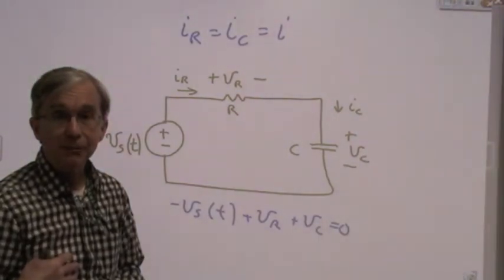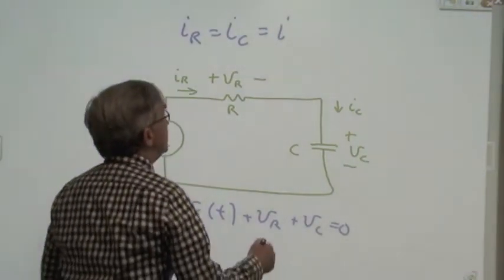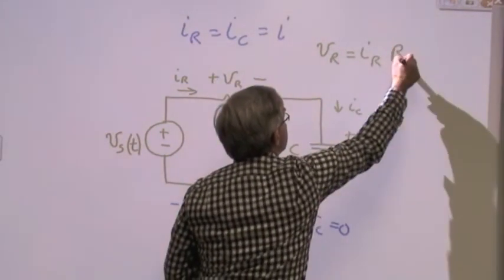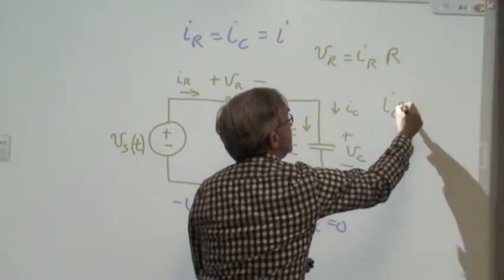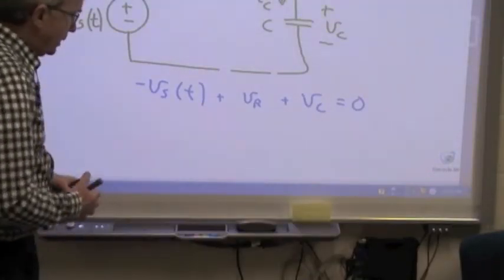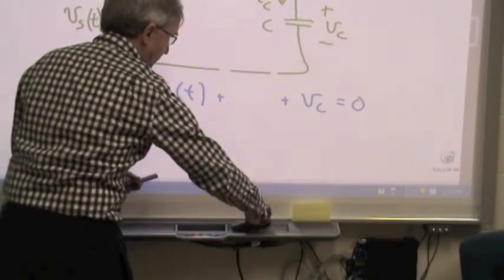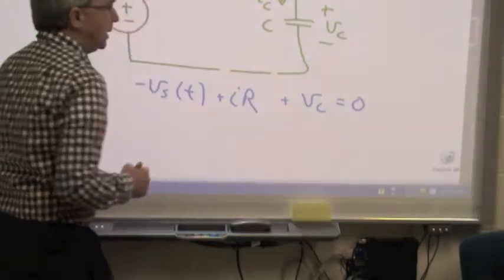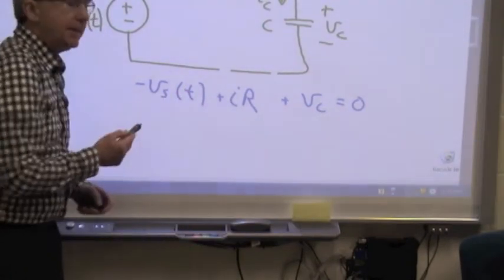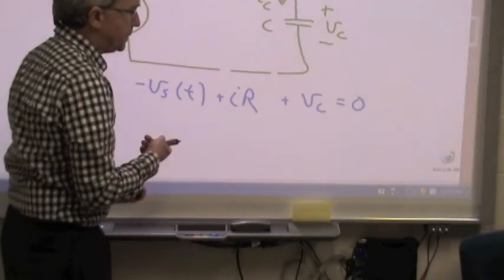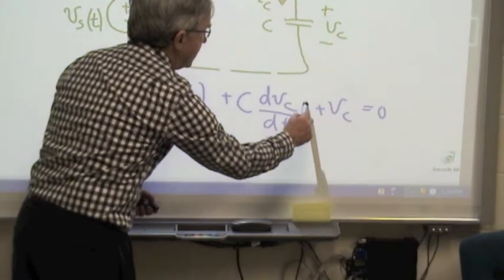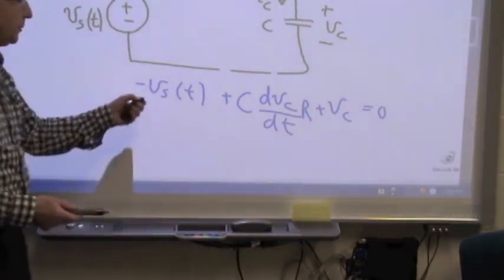What about the element constraints? Well, for the element constraints, of course, for the resistor, we can say that Vr is equal to the resistor current times the resistor value. And we can say that I is equal to C dVc/dt. Let's replace Vr by Ohm's law, I times R. And now let's use the element constraint to say that I is equal to C dVc/dt. Actually, that's the element constraint plus Kirchhoff's current law. So I'll have C dVc/dt times R plus Vc is equal to zero with the Vs term.